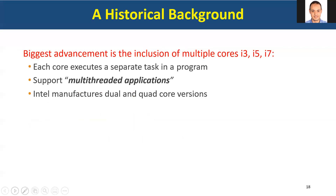The latest Intel achievements are the i-series processors: i3, i5, i7, and i9. The major advancement here is the integration of multiple cores — for example, the i7 has six or eight cores — allowing you to execute tasks in parallel and run multi-threaded applications. That's it for this part of the lecture.